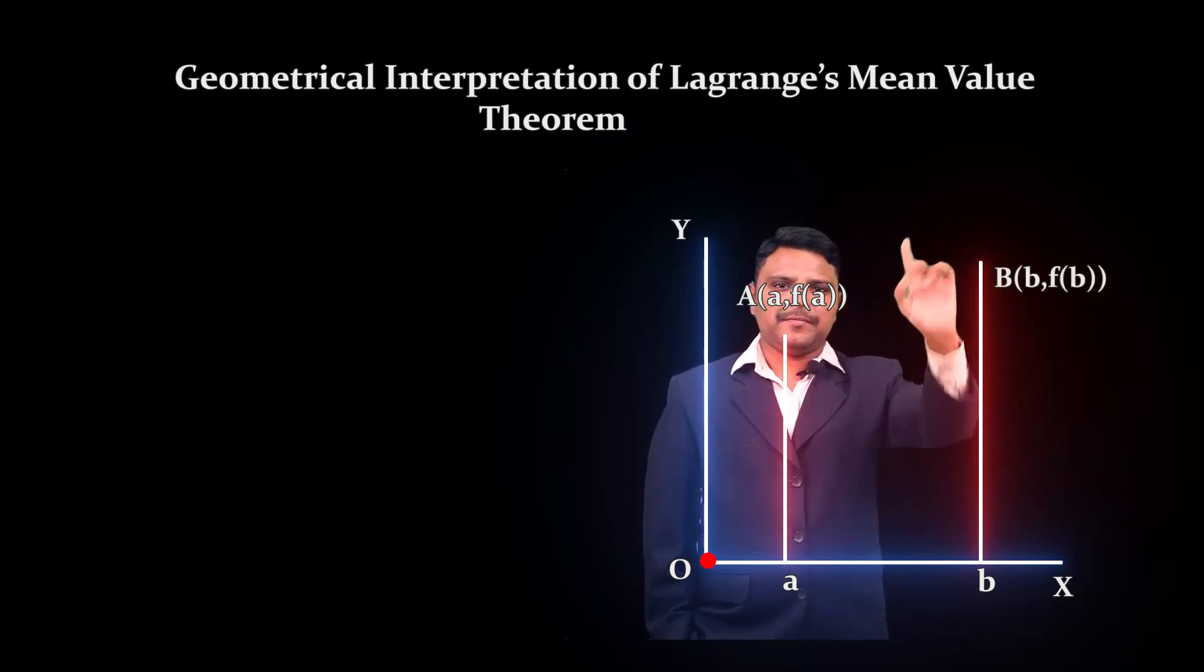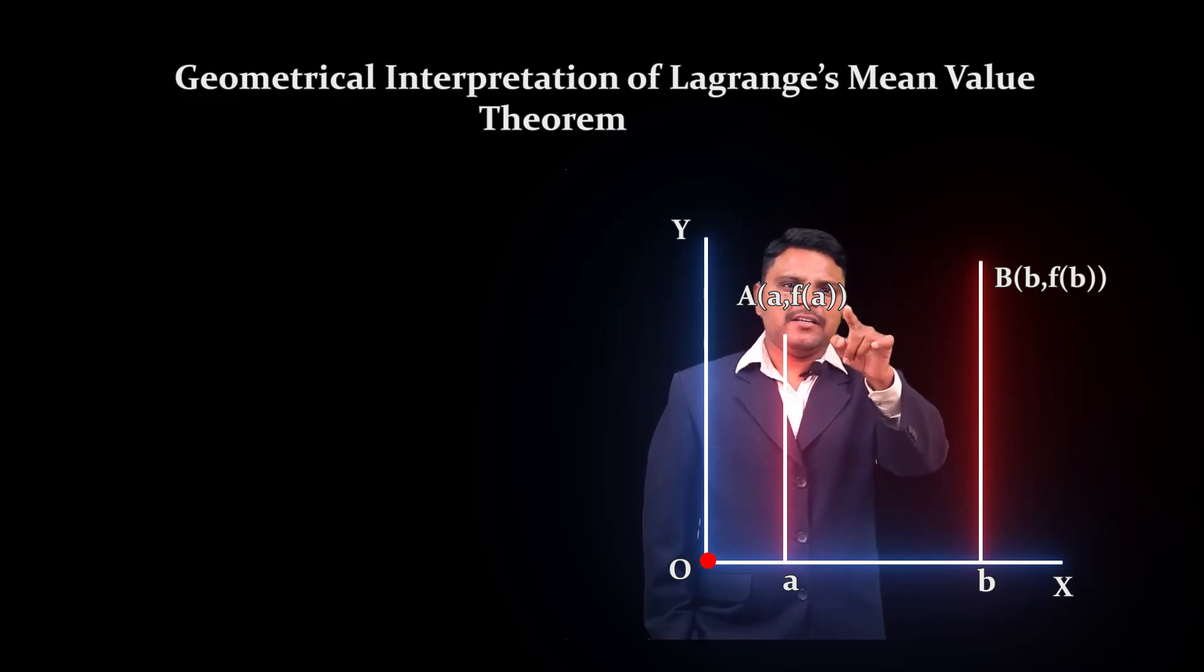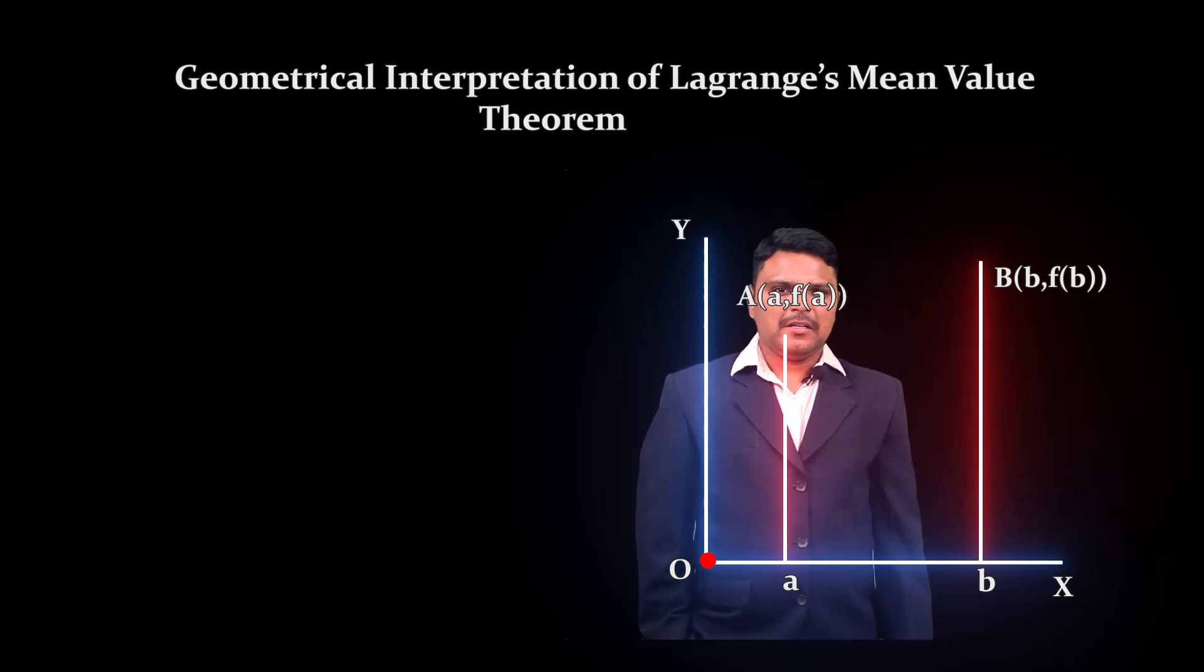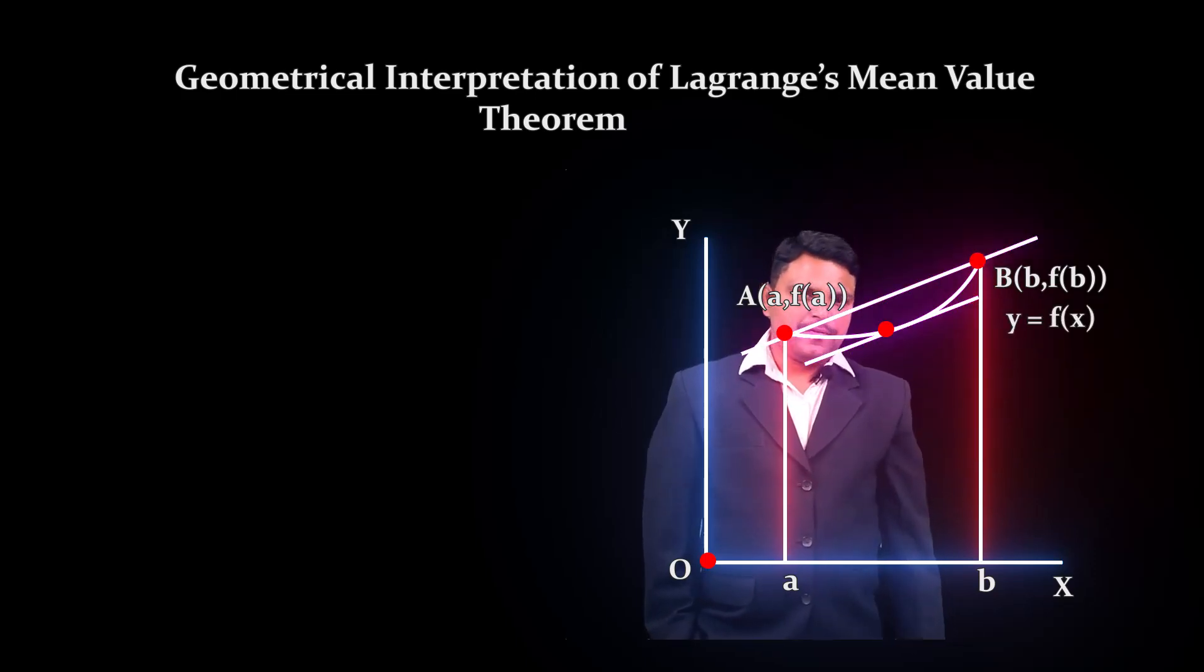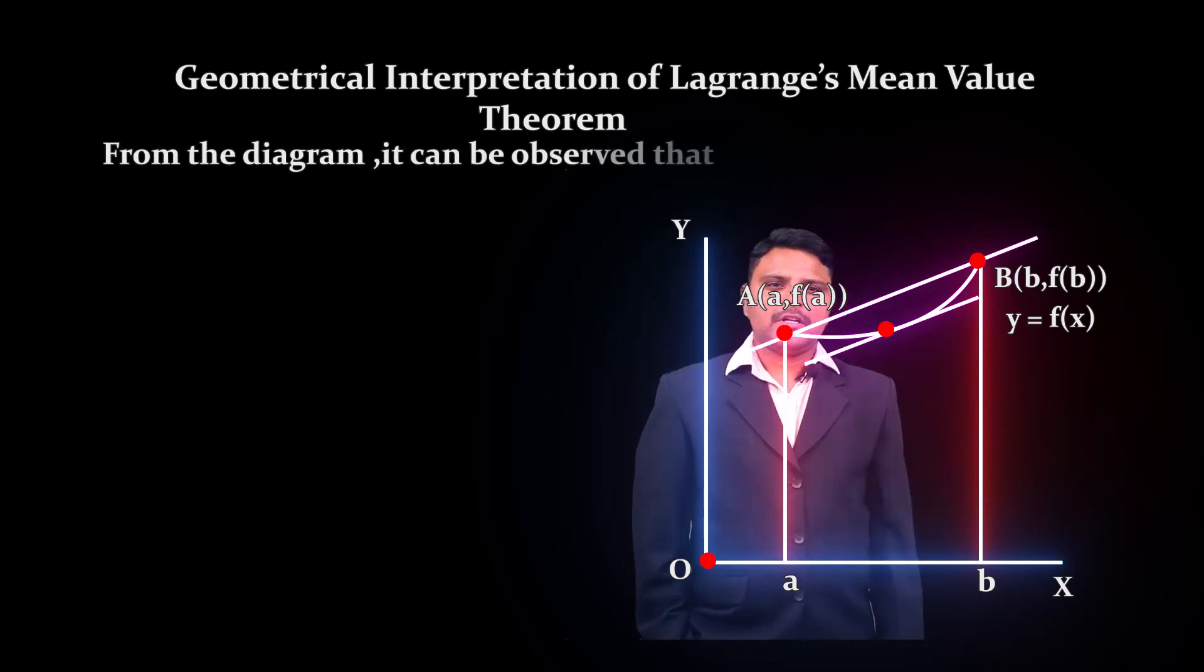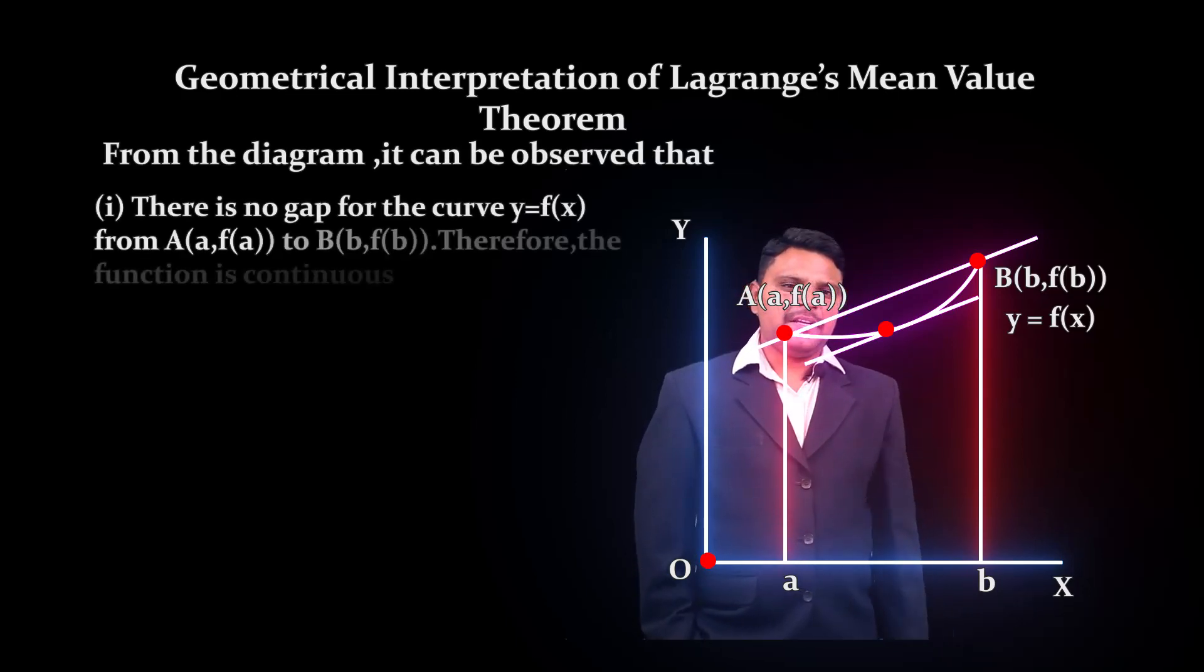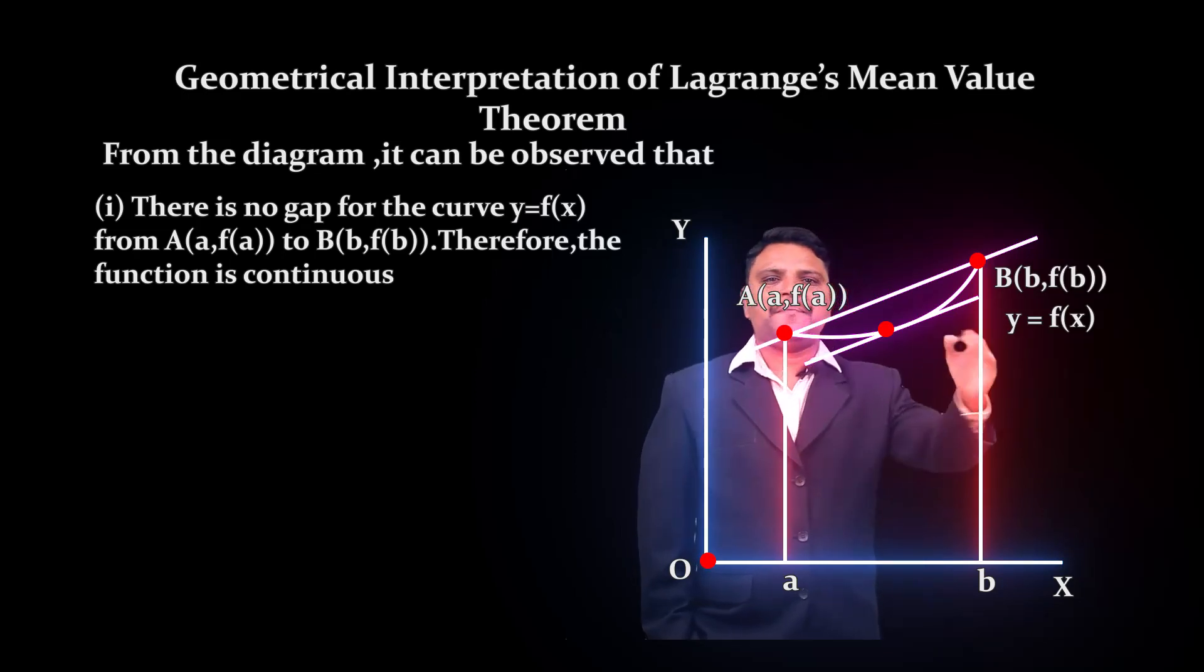Now, this is the graph of y = f(x). It can be observed from this graph that there is no gap between point A (a, f(a)) and point B (b, f(b)). Between these two points, the graph of y = f(x) is a smooth curve without any break.